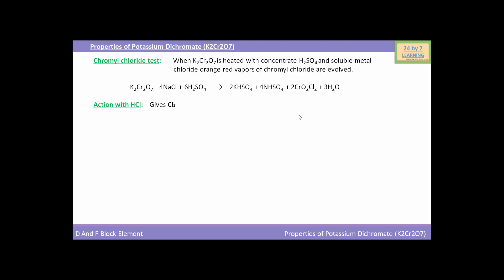Now we will see the action of potassium dichromate with HCl. On reacting with hydrochloric acid, potassium dichromate gives chlorine. K₂Cr₂O₇, potassium dichromate, when reacted with HCl, hydrochloric acid, forms KCl, i.e. potassium chloride, and CrCl₃, i.e. chromium chloride, and H₂O, i.e. water, and Cl₂, i.e. chlorine.